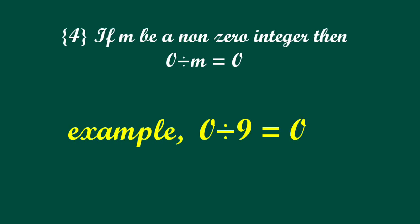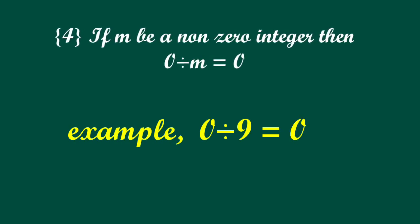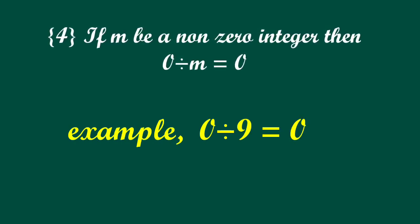If m be any non-zero integer then zero divided by m is always equal to zero.